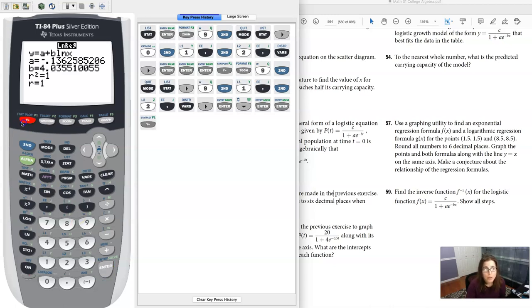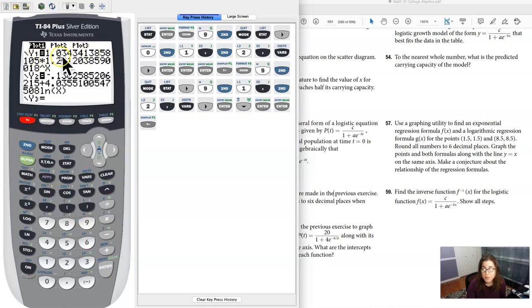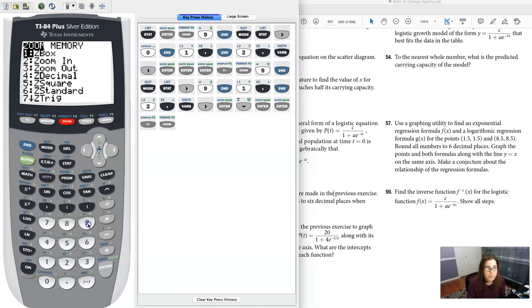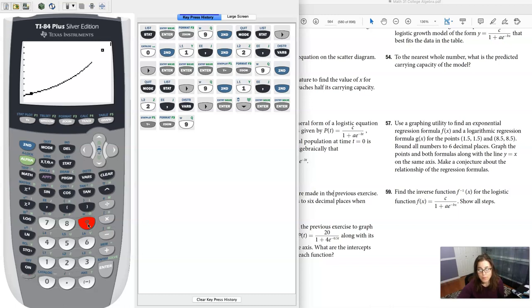And just to show you what I'm doing on the Y equals level. All right, there's my exponential model that we previously found. Here's the logarithmic model that we just found. And let's hit zoom 9. All right. And here comes my logarithmic model. Great. Now that looks kind of cool. It kind of looks like a fish sort of to me.